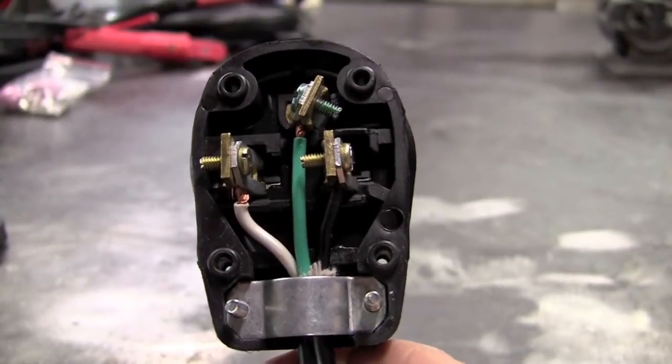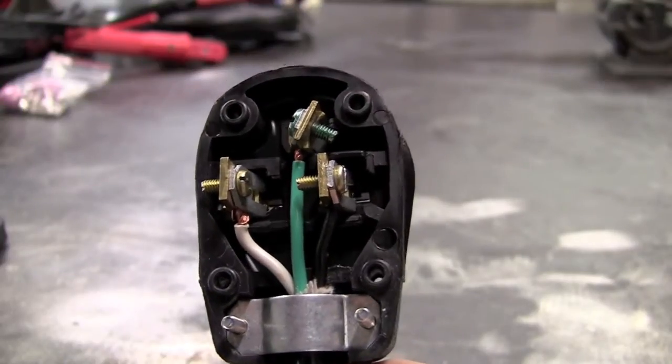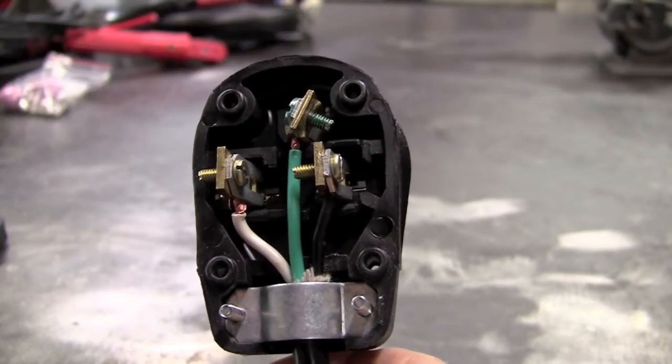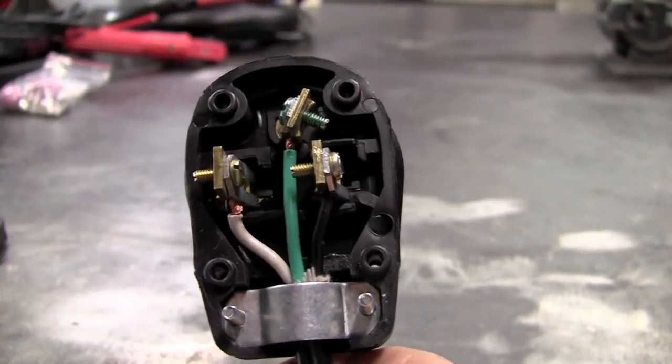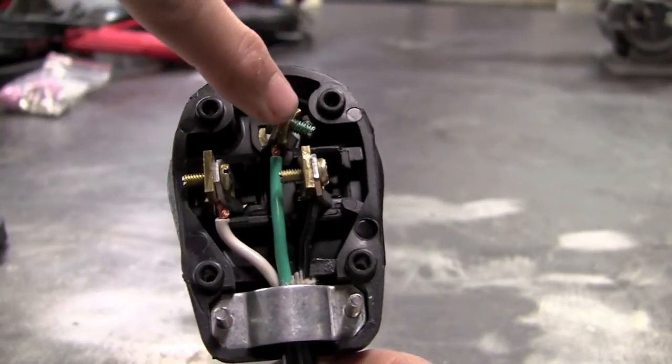For the wiring, once again I made a trip to Home Depot. I purchased the Levington 30 to 50 amp receptacle that's compatible with my shop. Black will be L1, white L2, and green for ground.